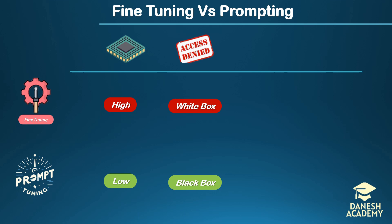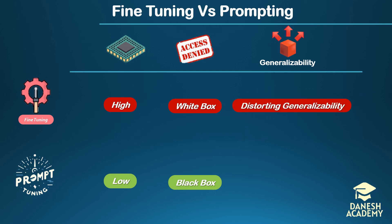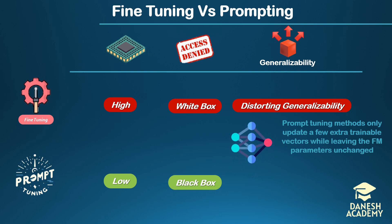The paramount merit of foundation models lies in their general-purpose understanding, acquired from large general-purpose datasets, which is reflected in the weights of their parameters. Fine-tuning these models involves making slight adjustments to these parameters to enhance performance on downstream tasks. However, it has been demonstrated that distorting well-specified parameters can adversely affect the generalization ability of foundation models. In contrast, prompt tuning methods only add a few extra trainable vectors while leaving the foundation model parameters unchanged.